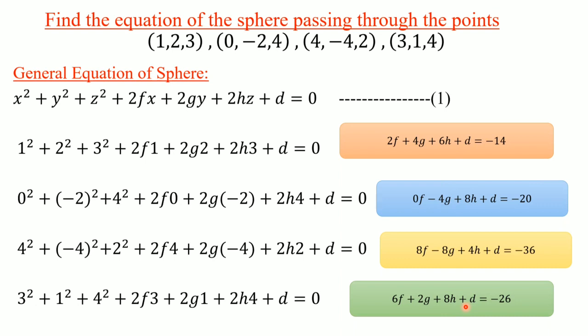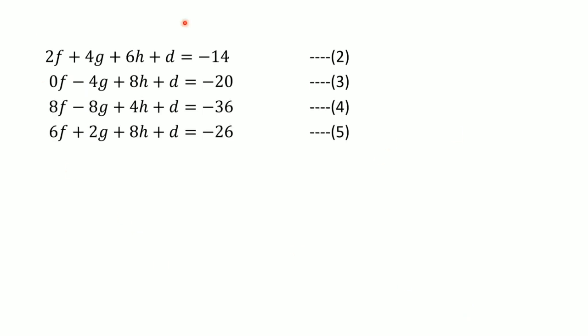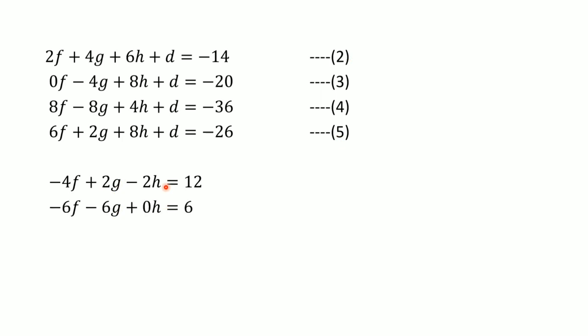In the center-radius form we had three equations in three unknowns; here we have four equations in four unknowns. Solving a 4×4 system directly is very lengthy. Instead, we subtract equations from each other so that d cancels. Subtracting equation 5 from equation 2, equation 5 from equation 3, and equation 5 from equation 4, we reduce this to a 3×3 system in f, g, and h.